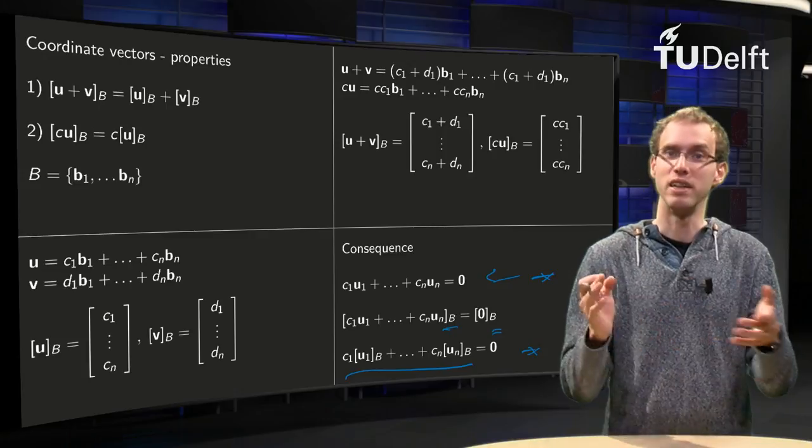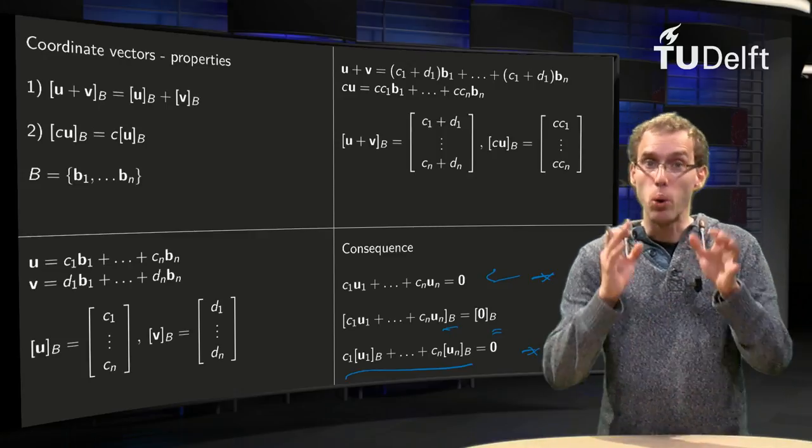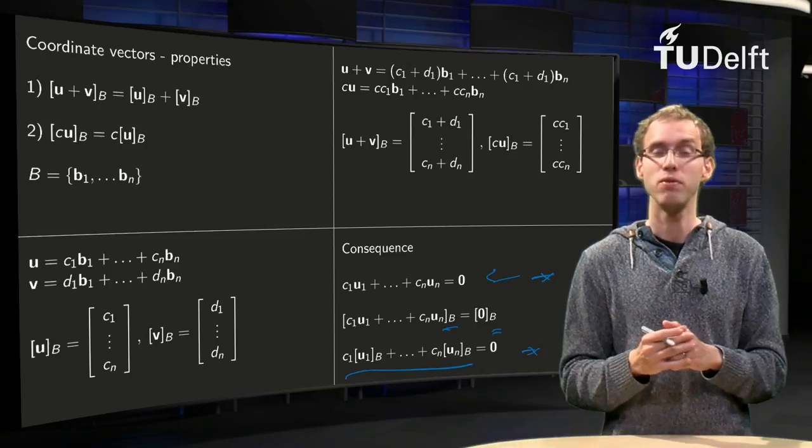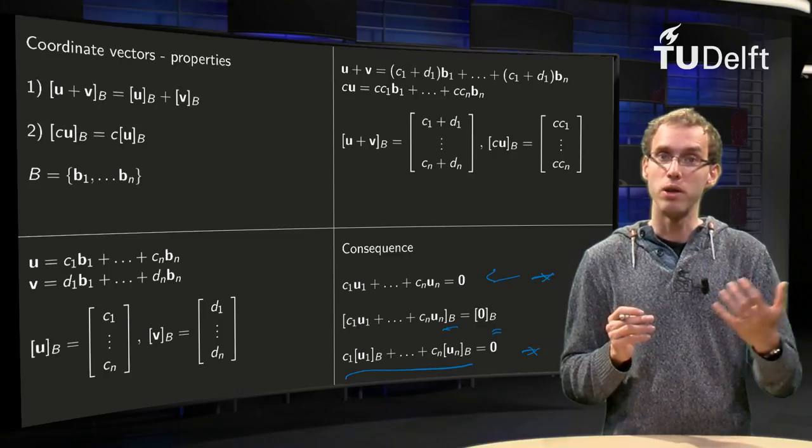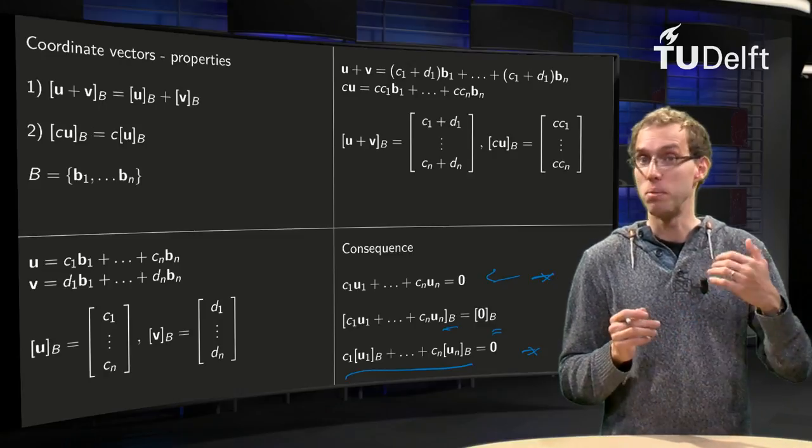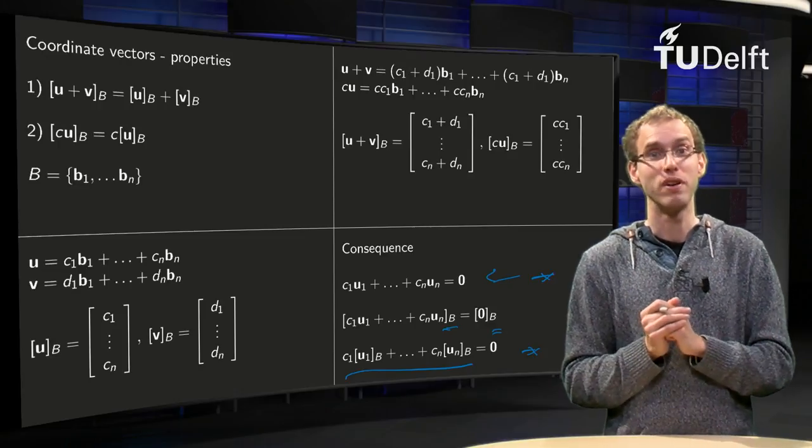And you can do the same trick for spanning linear combinations. So instead of computing with the original vectors u1 up to vn, which can be awkward, you can use the coordinate vectors to do the computations and to establish things like independence. And that's a nice part of our coordinate vectors.